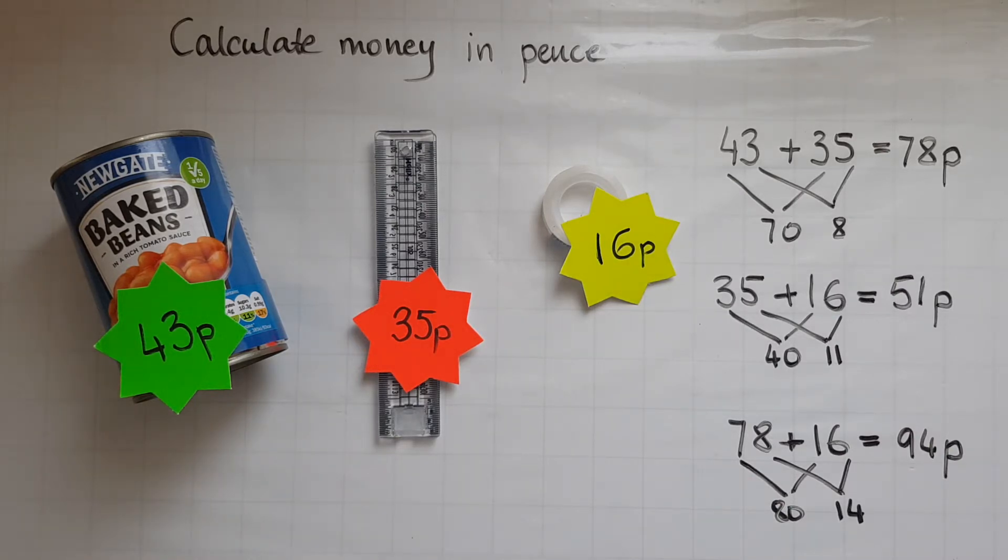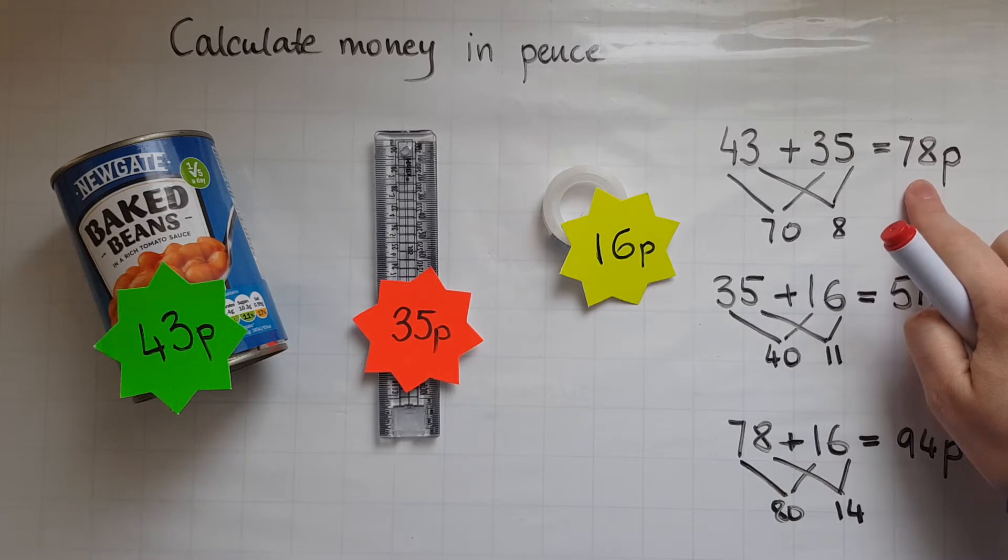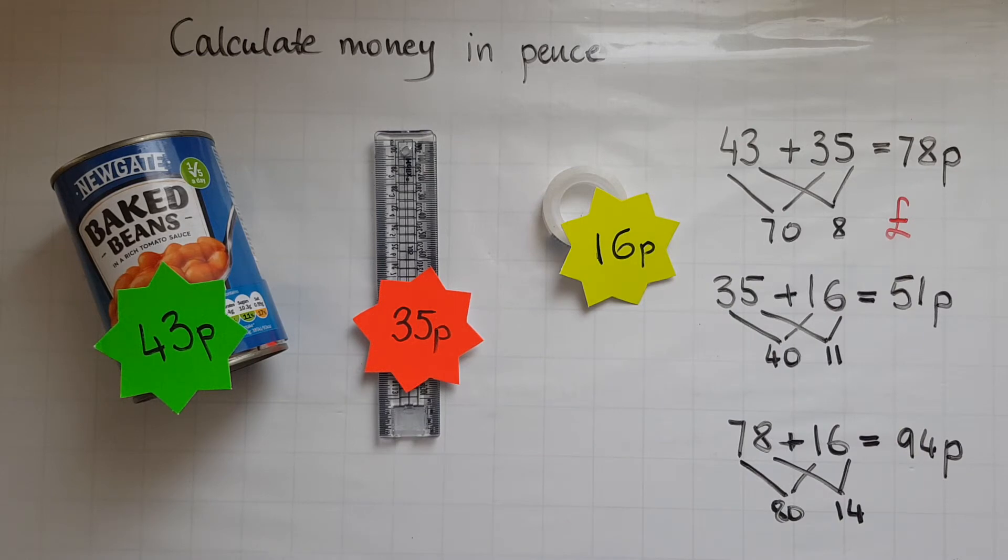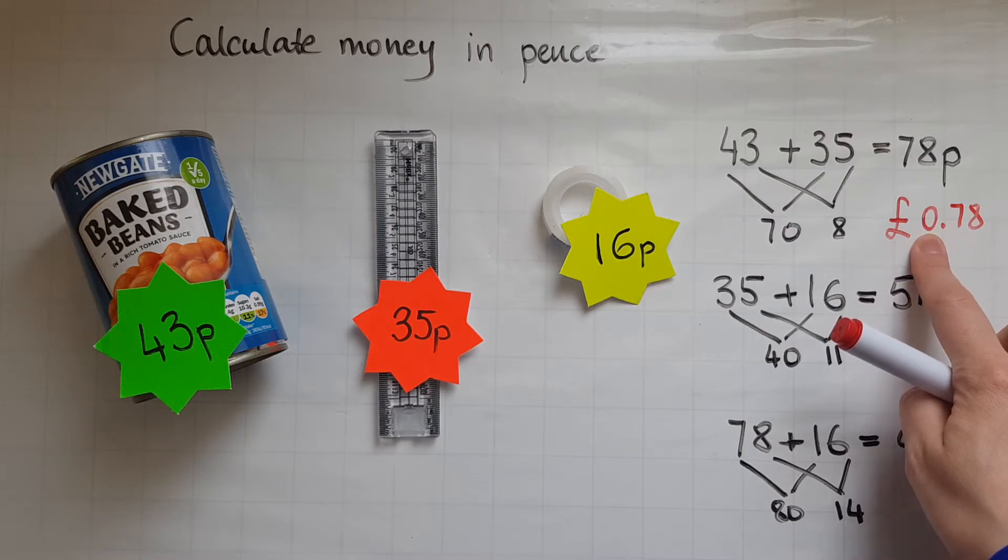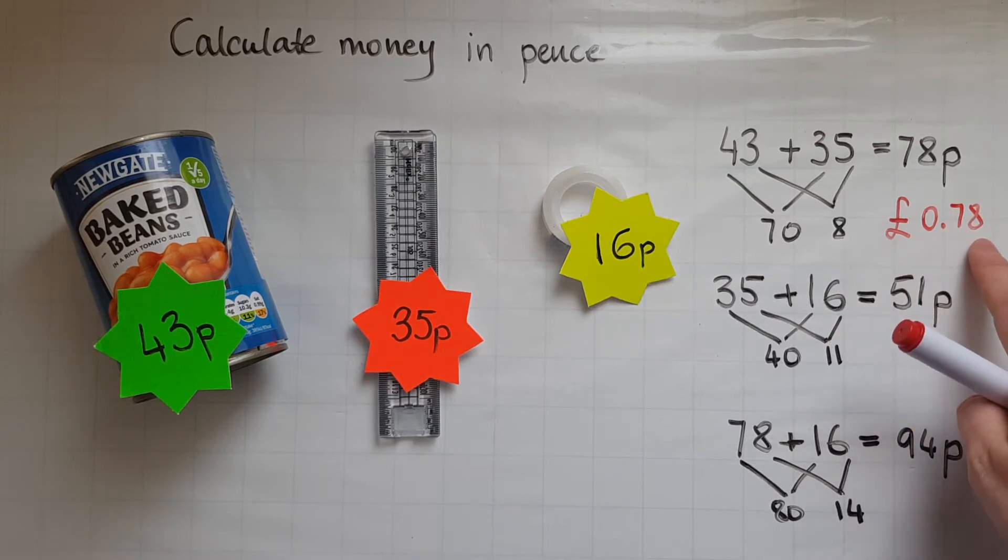Now I want to take this one step further and show you how we'd write 78 pence using a pound sign in front. So the way we write that is £0.78. So that 0 there means that there are no whole pound coins, and we've got 78 pence.